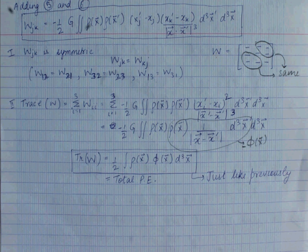By the construction of this equation, W_jk is a symmetric matrix — interchanging j and k leaves the expression unchanged, so W_jk = W_kj. In fact, over 90% of physical matrices we deal with in physics are symmetric.